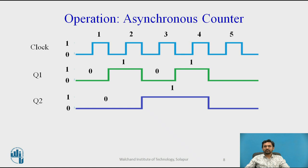From the timing diagram, we can observe that Q1 changes state only during the negative edge of the applied clock. Initially, the flip-flop is at state 0. The flip-flop stays in that state until the applied clock goes from 1 to 0. Since the JK inputs are both 1, the flip-flop toggles and changes state from 0 to 1. This process continues for all pulses of the clock. For the second flip-flop, the waveform generated by flip-flop 1 serves as its clock pulse, so Q2 changes when Q1 transitions from 1 to 0.